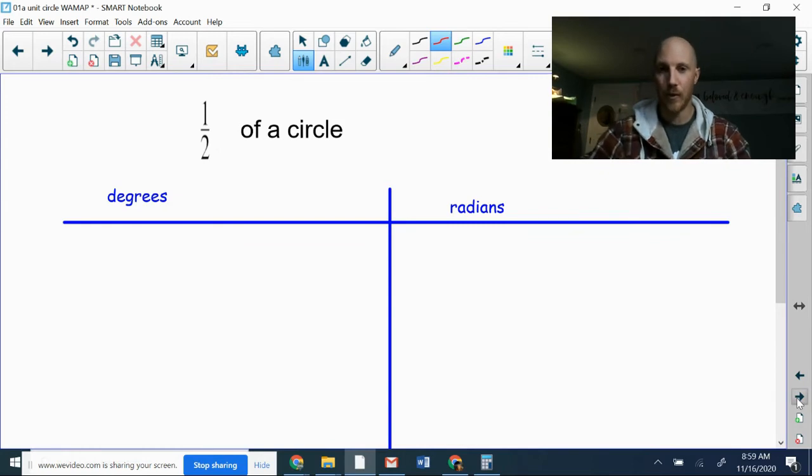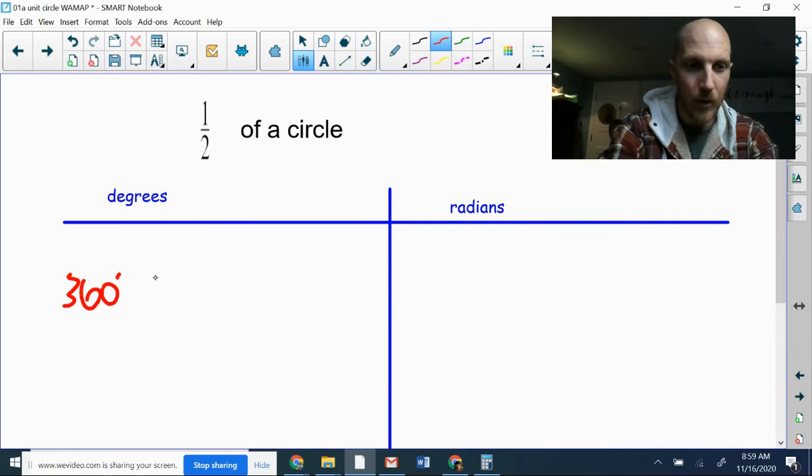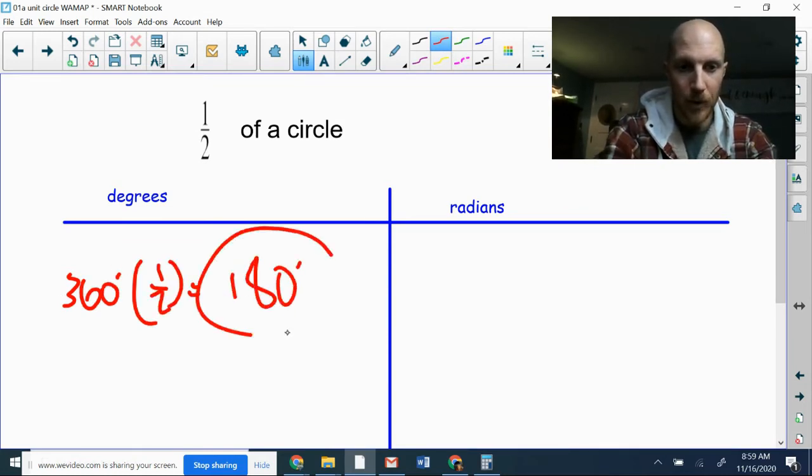What about one half of a circle? Okay, well, 360 degrees multiplied by a half. That's 180 degrees.